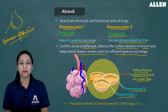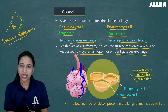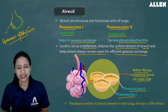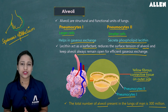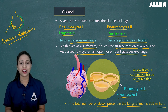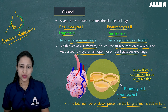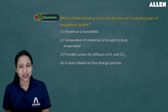The total number of alveoli in humans is 300 million. This is all about the human respiratory system. Let's move on and solve some questions related to the same topic.